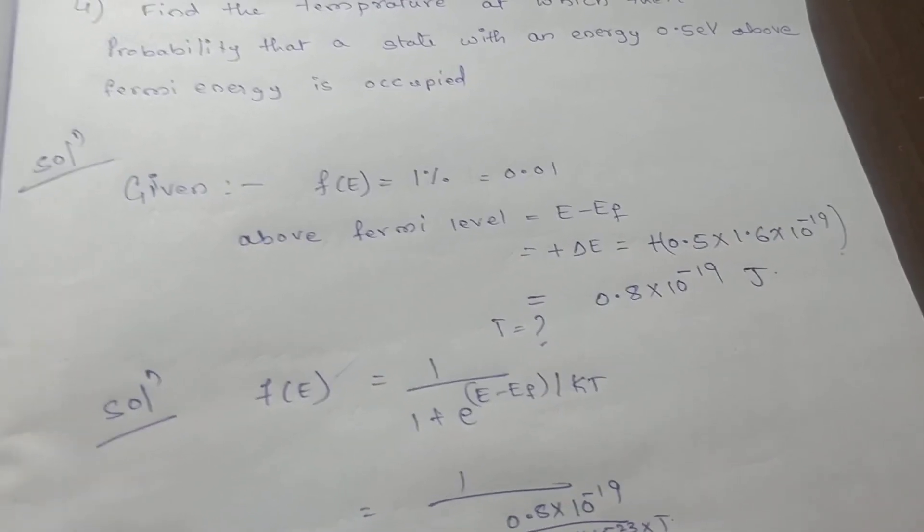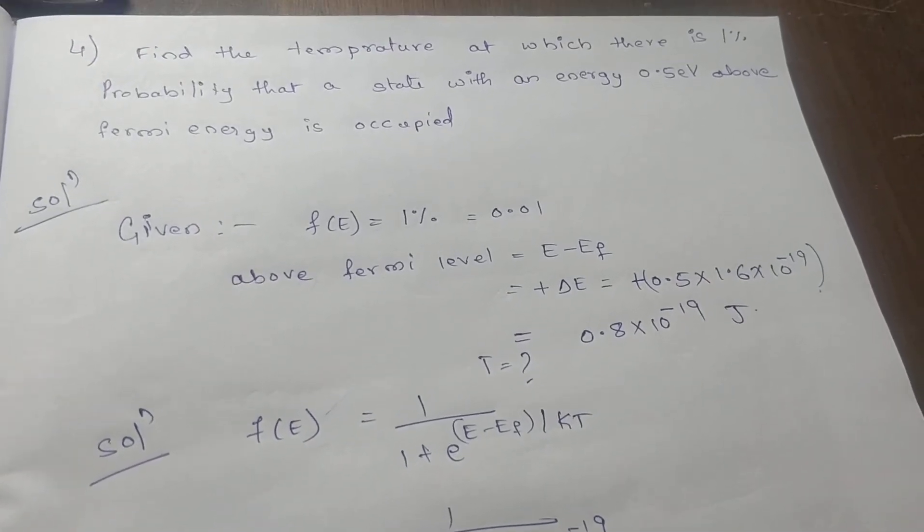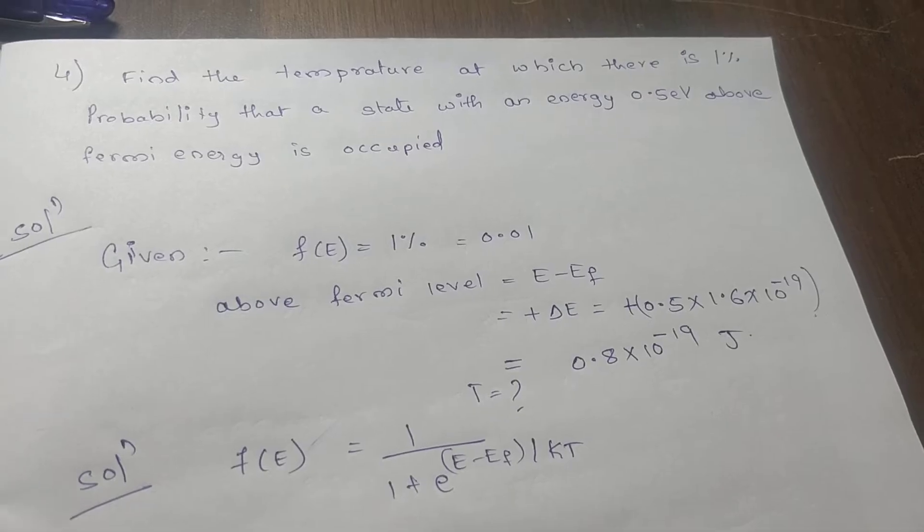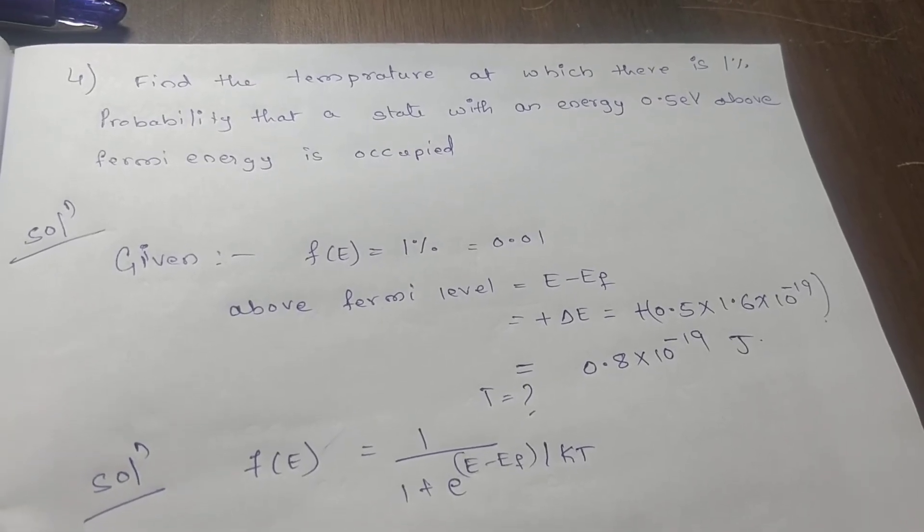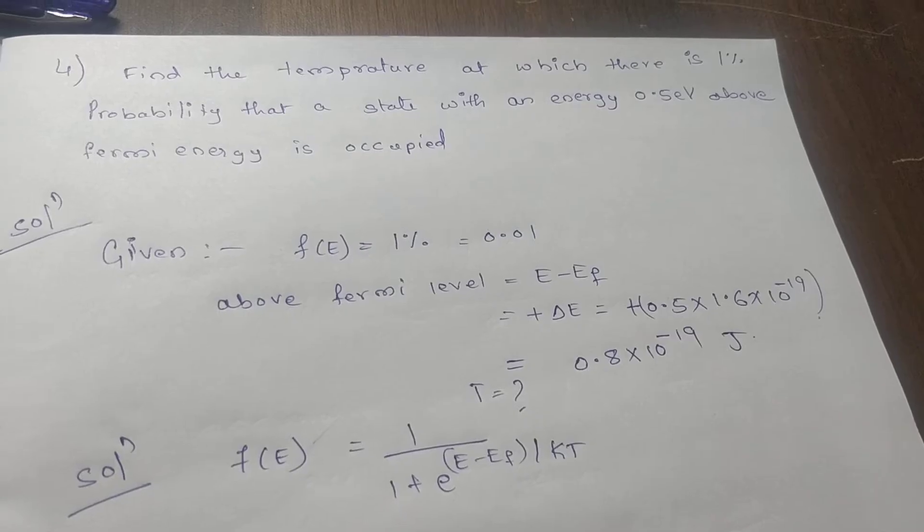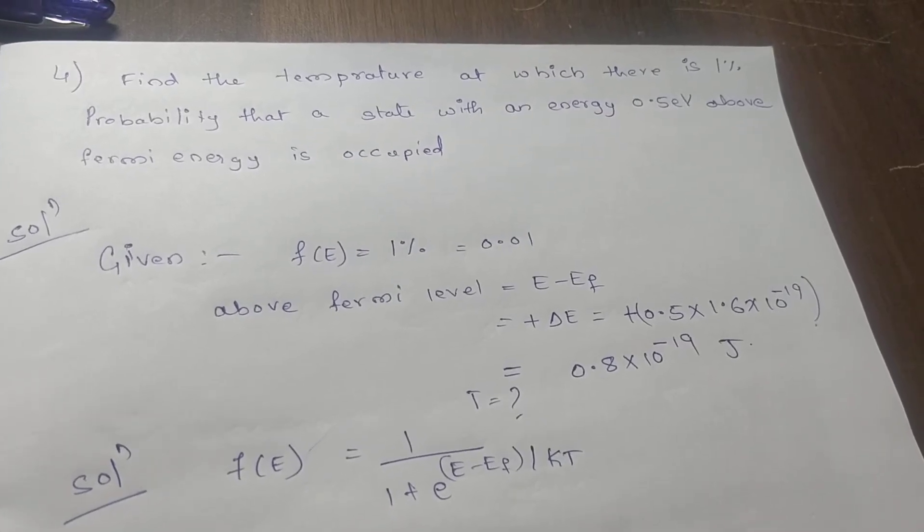We'll go with the given data, what they have asked for. So they have asked for temperature, we have to find the T value. Before that, we'll write the given values. They have given probability value, that is f of e is 0.01.